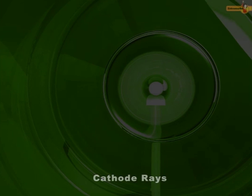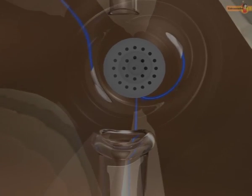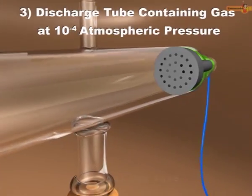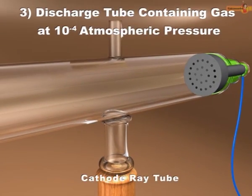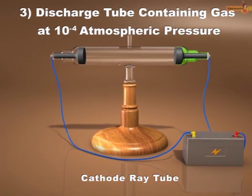These rays are called cathode rays because they originate from the cathode. Since cathode rays are produced in a discharge tube, the discharge tube is referred to as a cathode ray tube.